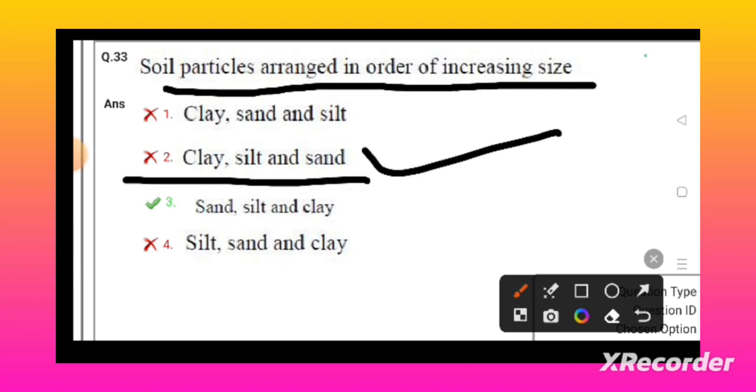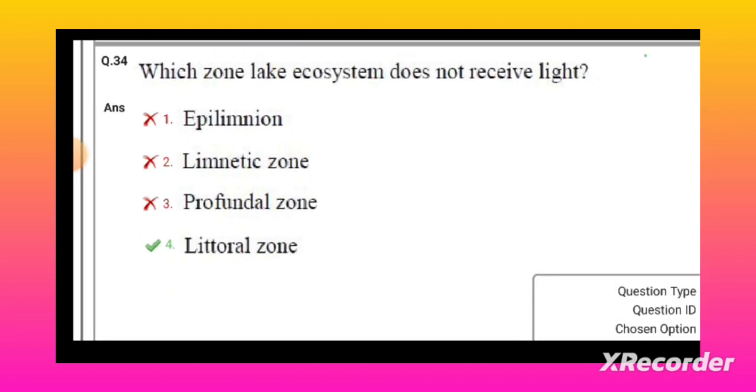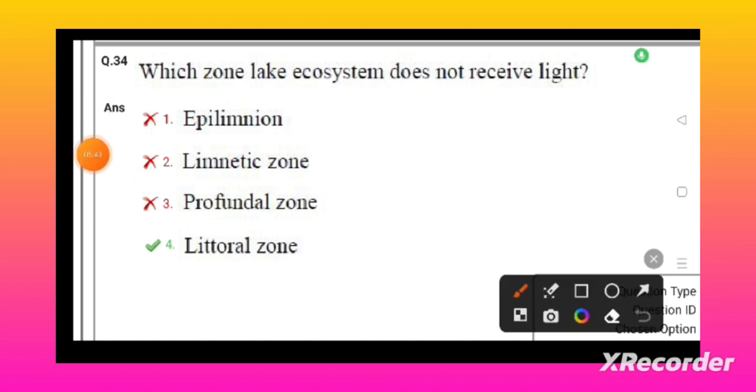The zone of the lake ecosystem that does not receive light is the profundal zone of the lake ecosystem.